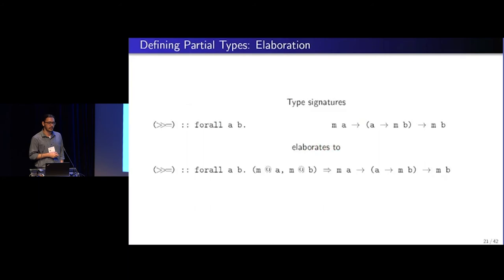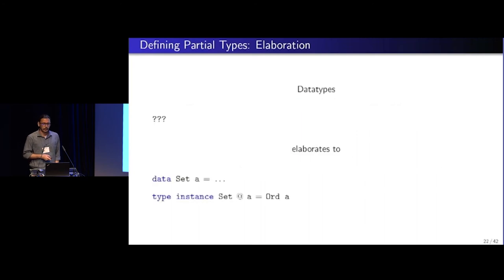For any type signature that we see, we traverse the type signature and see if there are any type applications and just pull out the constraints as what we would need, where m at b would correspond to the m at b constraint that is in the context.